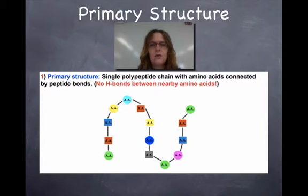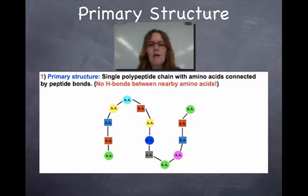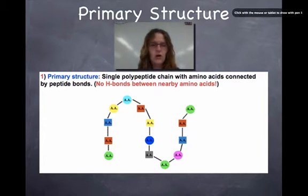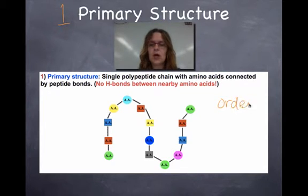The way to remember what proteins look like is that there are four different levels of protein structure. The first level is called the primary structure of a protein. A primary structure of a protein is very simple — it is the order of amino acids.